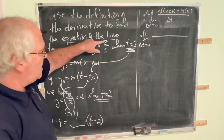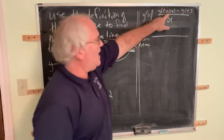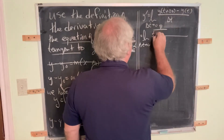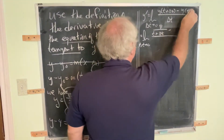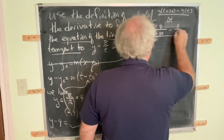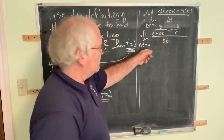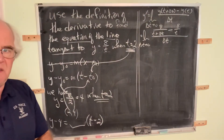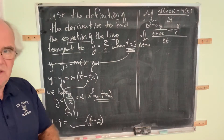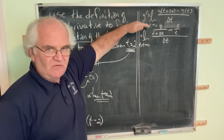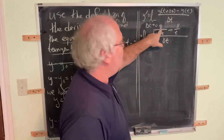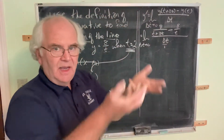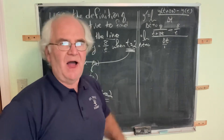Direct substitution gives 8/t minus 8/t, which is zero divided by zero. So we do some algebra — simplify and try again. We recognize this footprint: we need to subtract these fractions to create a single fraction in the numerator, a single fraction in the denominator, and then multiply by the reciprocal to simplify the complex fraction. First, combine into a single fraction by finding a common denominator.